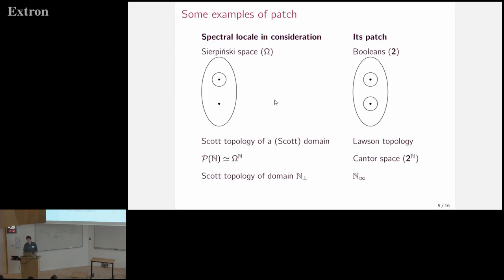And the patch topology is sometimes called a topology of positive and negative information, especially when one adopts the computational view of topology. So let me give some examples that illustrate this. So if we take the Sierpinski space, for example, which is like a space of truth values for experiments whose positive outcomes are detectable, whereas their negative outcomes might not be detectable. And if we take the patch of Sierpinski, we get the booleans where both positive outcomes and the negative outcomes are detectable. So this is one example of the sense in which patch is a topology of positive and negative information. And there are many more interesting examples, but unfortunately I don't have time to spend too much time on this.